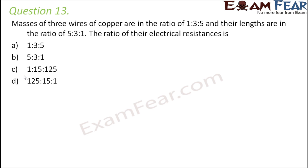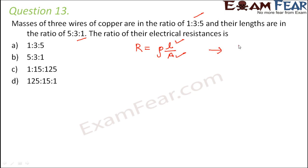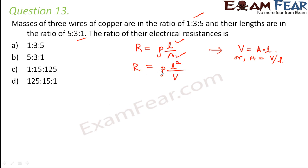Question number 13. Masses of 3 wires of copper are in the ratio 1:3:5, and their lengths are in the ratio 5:3:1. The ratio of their electrical resistances is? We know resistance R equals rho L by A — resistance is directly proportional to length and inversely proportional to cross-sectional area. We need to express resistance in terms of mass and length. Area can be written as volume per unit length, so resistance equals rho L squared by V.